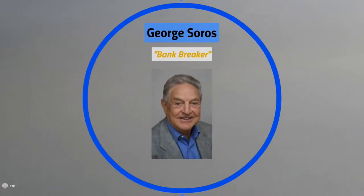Moving on to our second global macro icon is George Soros, best known as the co-founder of the Quantum Fund with Jim Rogers and Stanley Druckenmiller. Soros is known as the guy who broke the Bank of England by putting on a short position worth billions on a day in England known as Black Wednesday. He's known for putting on large trades that seek to exploit changes in central bank policy, global interest rates, GDP growth, and inflation.